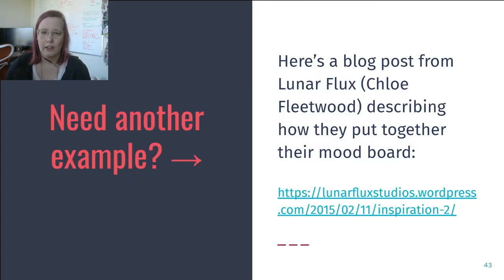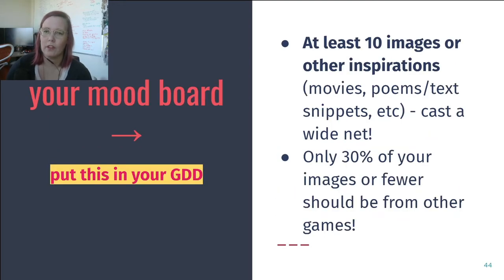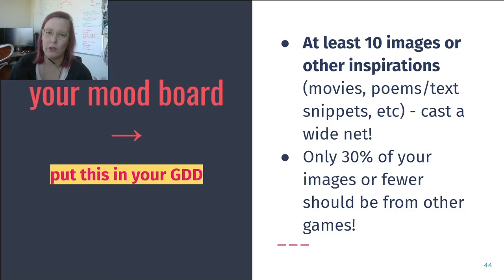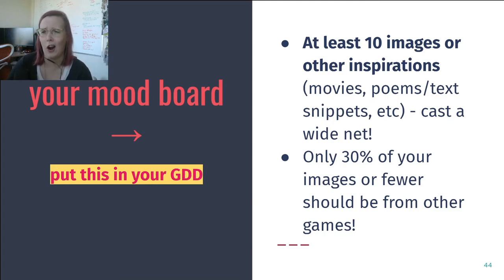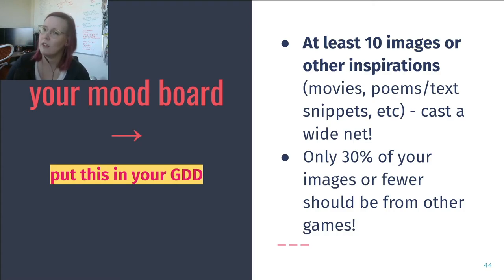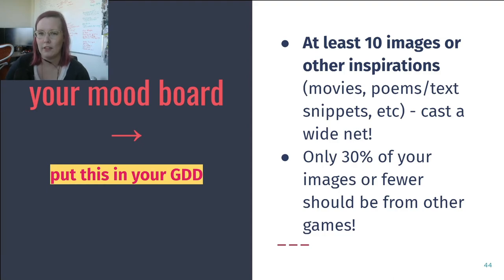If you need another example, there's a link here to a blog post from Lunar Flux by Chloe Fleetwood describing how they put together their mood board. And in class I may show you some further examples as well. For your mood board for your GDD, I would like to see at least 10 images or other inspirations — movies, poems, text snippets, etc. Cast a wide net. Only 30% of your images or fewer should be from other games, so if you have 10 images, three can be from games and the rest should be from other inspirations. My own mood board had nature photos, Hexel's art, low poly animals, jewelry, statues, fun rocks, plus some movies, TV shows, and games. Gabby's, for example, was a lot of street art, fashion, illustration, and aesthetic photos. I want inspirations from a wide variety of places, not all from one source.